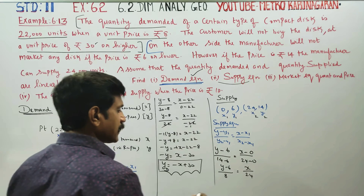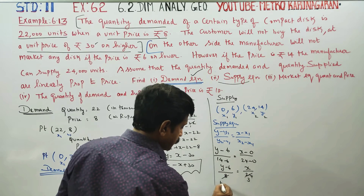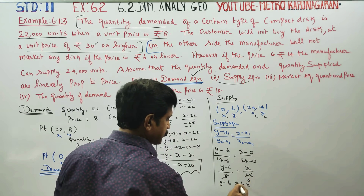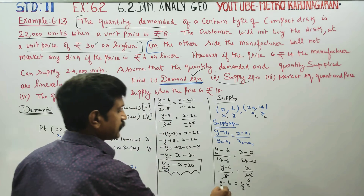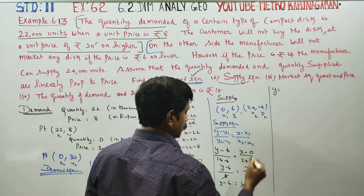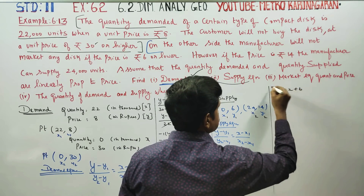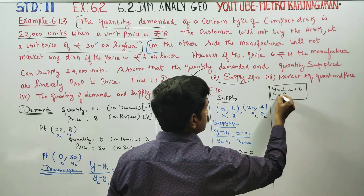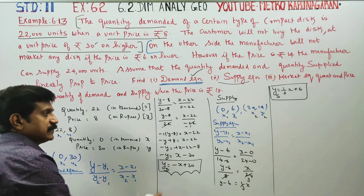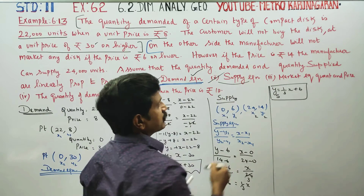Simplifying: the 8 and 24 give a factor of 1/3. So y - 6 = (1/3)x, therefore y = (1/3)x + 6. This is the supply function.